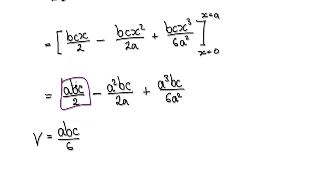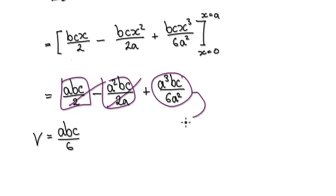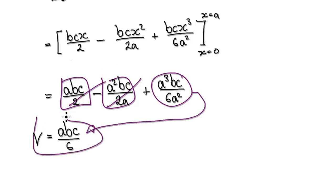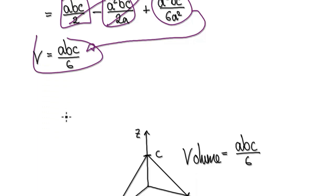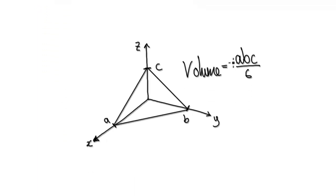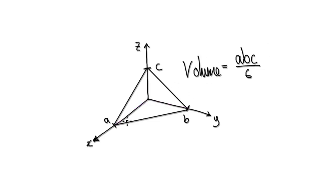These two terms cancel each other out, giving you this. Simplifying, the volume is given by this. So our volume is given by this — this is our final answer. If you want to work out the volume of this tetrahedron, just take the length a, times the length b, times the length c, and divide by 6. That gives you the volume.